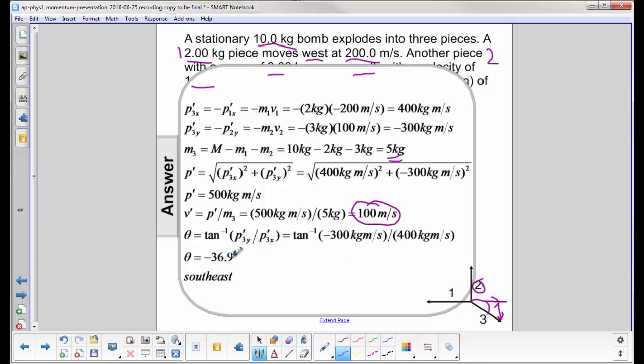And you can either call it 36.9 degrees southeast of the x axis, or you can just say negative 36.9 degrees. Either one works. So that's the final answer. That's the magnitude and that's the direction of the third piece.